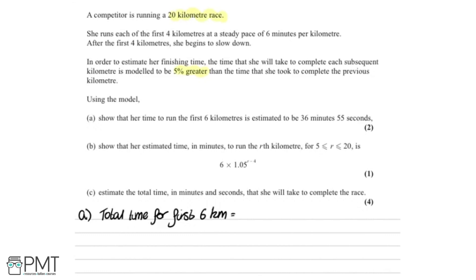We see she runs the first 4 kilometers at a steady pace of 6 minutes per kilometer. So we can write this down here: this will be 6 times 4, which is 24 minutes in total. However, after that things change. She begins to slow down and the time she takes to complete each subsequent kilometer is modeled by 5% greater than the time to complete the previous kilometer.